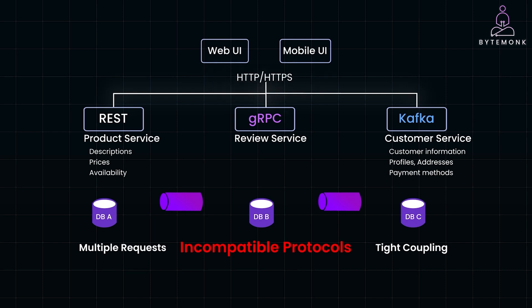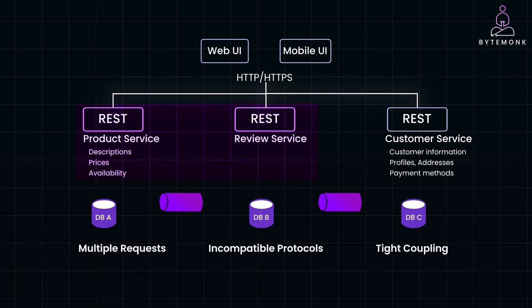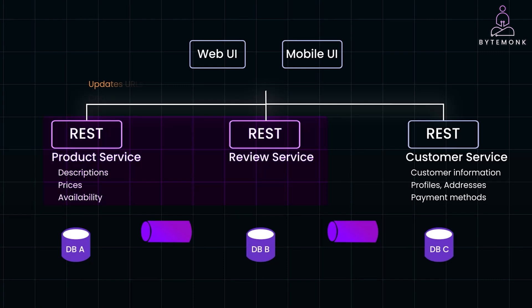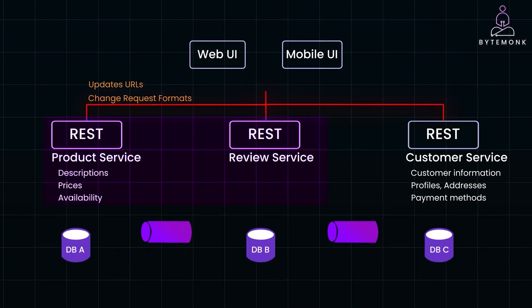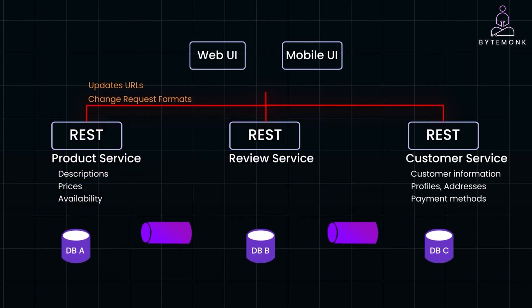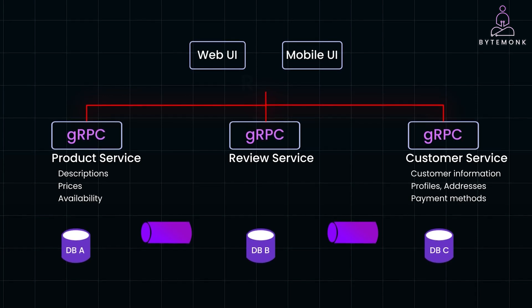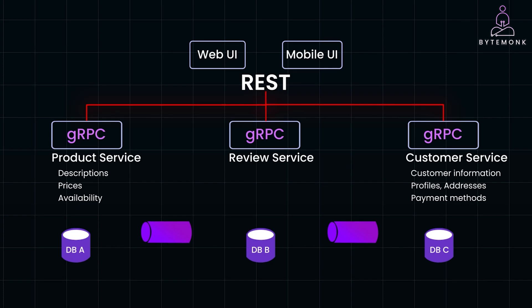Imagine that you decide to change the underlying architecture by merging the review service with the product service to reduce the number of service calls and improve performance. With direct client-service interaction, you would have to update every client application to reflect this change — updating URLs, request formats, and handling the new combined service. Or consider that your services use a binary protocol like gRPC for performance reasons, but your clients only understand RESTful HTTP APIs. Direct interaction would force you to either change the protocol, which might not be feasible, or create additional translation layers, which adds unnecessary complexity.